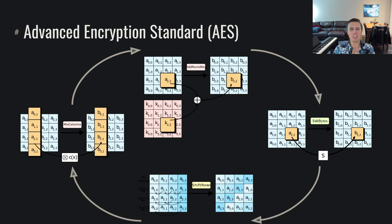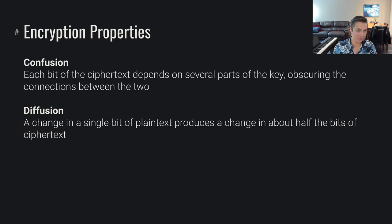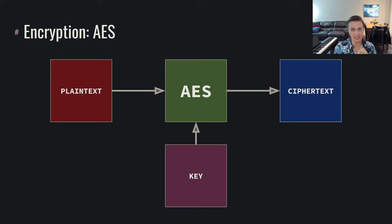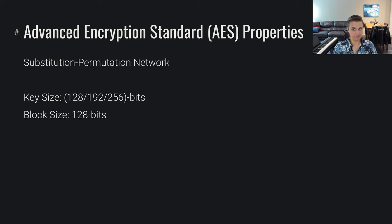A bunch of mathematicians and cryptographers have really looked at AES and given it the golden stamp of approval — yes, this really mangles the data. You can treat it as a black box that achieves confusion and diffusion. So we take some plaintext, throw it through the AES function along with the key, it produces ciphertext. Similarly for decryption: we take ciphertext along with the key, throw it through the AES decryption function, and result in plaintext.